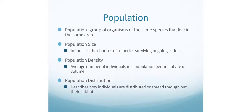However, the size of a population may be less important than its density. Population density is the average number of individuals in a population per unit of area or volume. Going back to that 100 insects example: 100 insects is the size. Now for density — it's the number of individuals per unit of area or volume. So 100 insects that live in an area of 100 square meters would mean one insect per square meter. 100 divided by 100 equals one — so that's one insect per square unit.